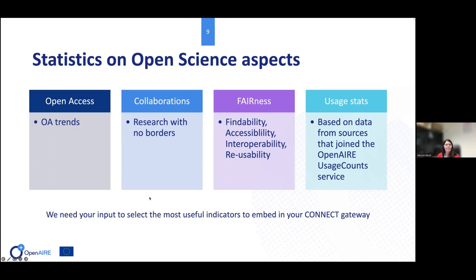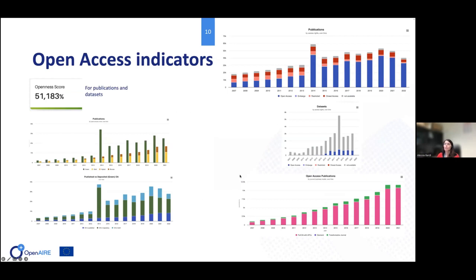In the next question, I'd like to ask which specific indicators within each category you think are most useful for your community. This will give us an idea of how to prioritize indicators and which ones make the most sense to you.